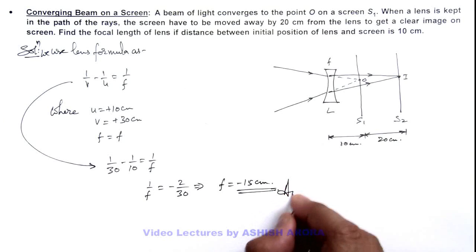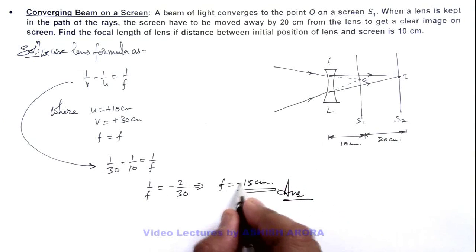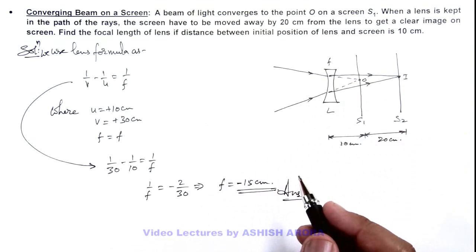This is the answer for this problem. The negative sign indicates that the lens we are using is a diverging lens.